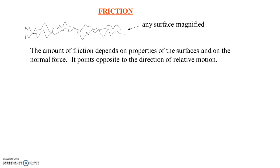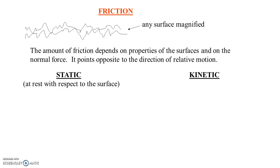Now friction will act while the object is in motion, but sometimes friction will also act to keep an object in place, which means there are two types of friction: static friction and kinetic friction. You've probably seen words like this before. Static refers to an object at rest with respect to the surface — it has the same root as stationary, S-T-A-T. And of course, kinetic means moving with respect to the surface.